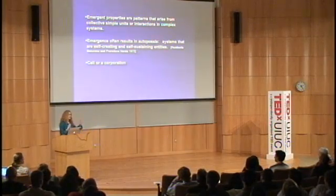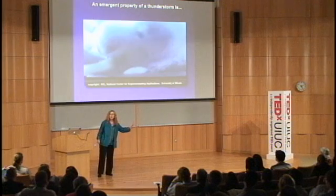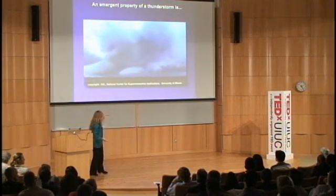Emergence is about properties that emerge from very simple units that come together in very complex systems. A cell or a corporation is a self-sustaining system that has come up from being made up of simple units, where properties — such as what a corporation does or what a cell does — emerge from those simple units as an interaction. I'm going to take you into a very familiar emergent self-sustaining system: a thunderstorm.